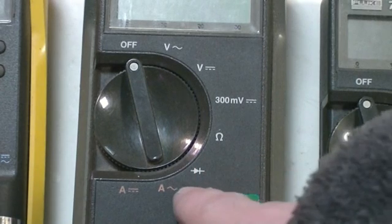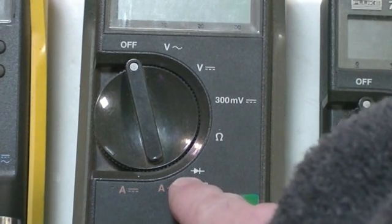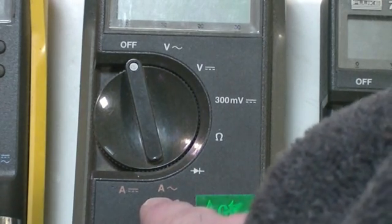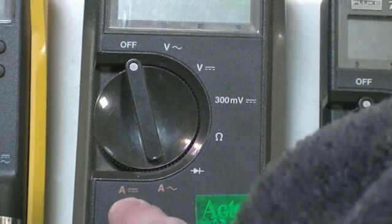Omega measures resistance. This measures the continuity of a diode. Current AC and amps, and current DC.